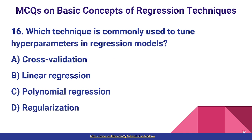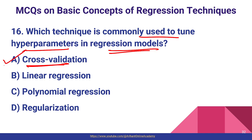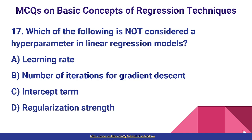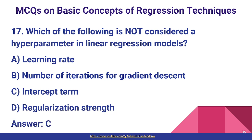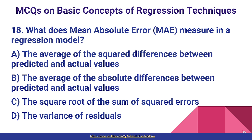Question number sixteen: which technique is commonly used to tune hyperparameters in regression models? We use cross-validation techniques for hyperparameter tuning in regression models, so option A is the correct answer. Question number seventeen: which of the following is NOT considered a hyperparameter in a linear regression model? Learning rate, number of iterations in gradient descent, and regularization are all hyperparameters. The intercept term is not a hyperparameter, so option C is the correct answer.